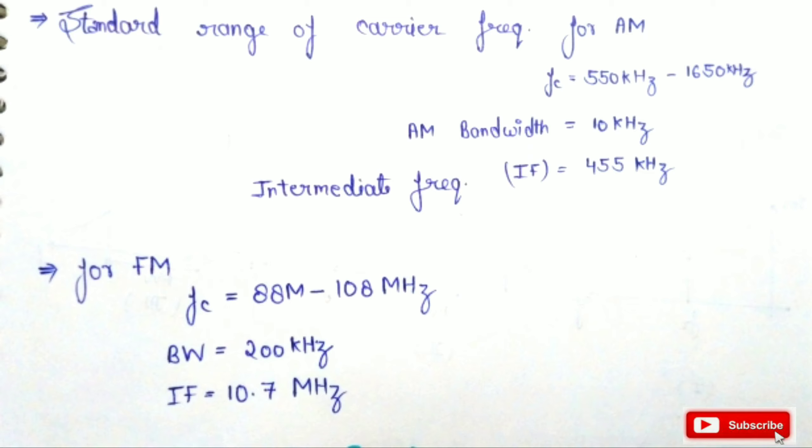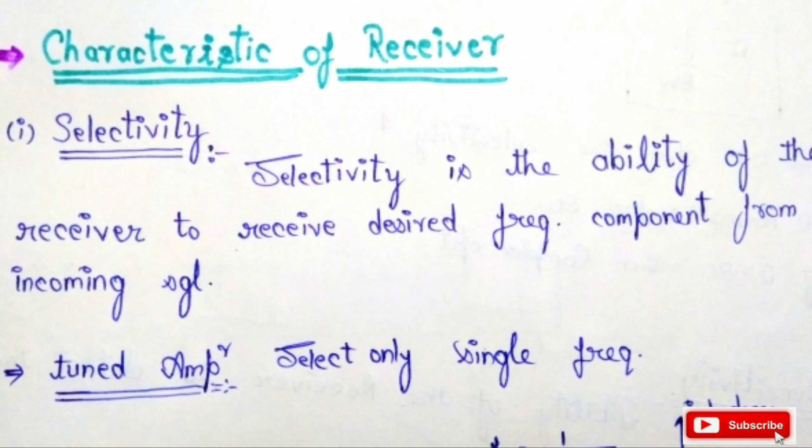Notice that for amplitude modulation the frequency range is given in kHz, and for frequency modulation the frequency range is given in MHz. Now let's look at the basic characteristics of the receiver.